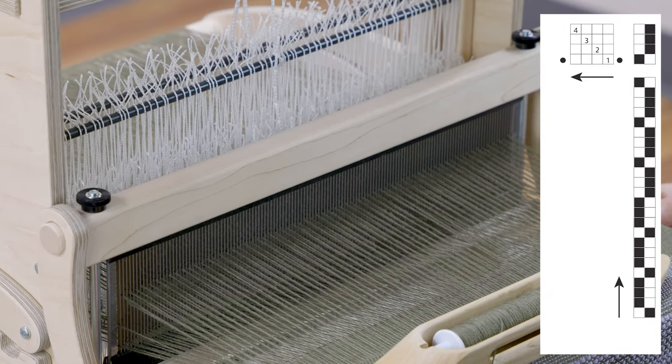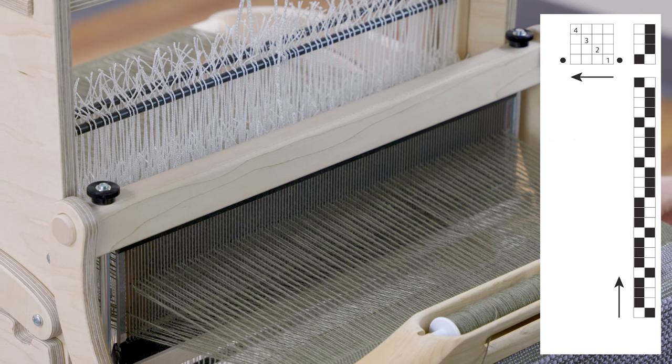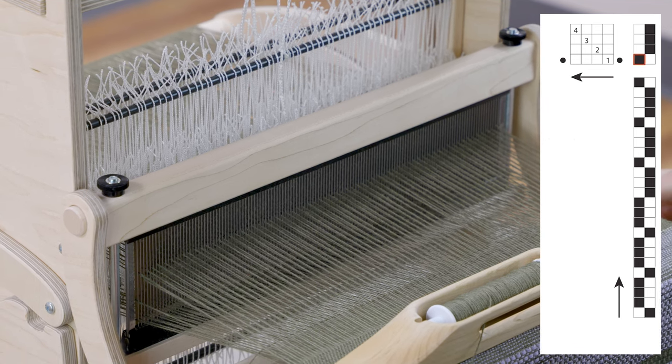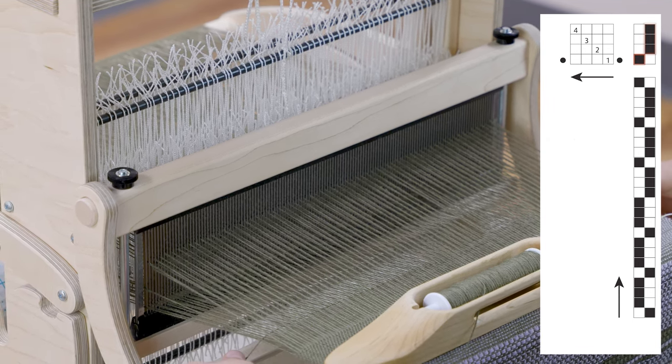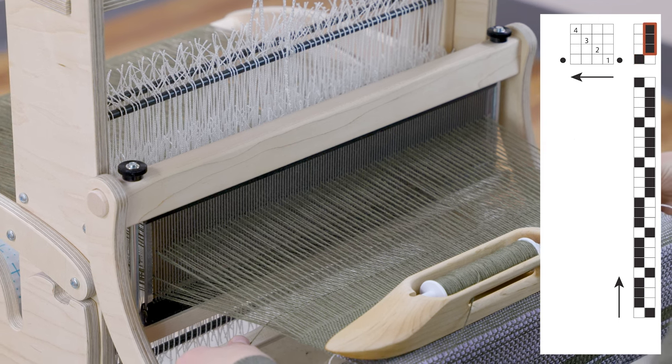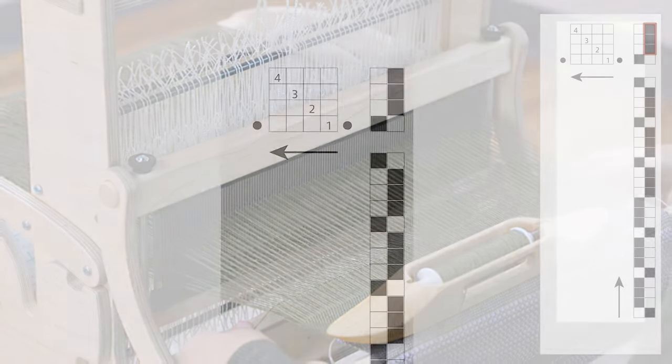If you are working with a loom with treadles, you'll tie up the shafts as indicated. Start with the first column and tie up shaft one. Then tie up the second treadle with shafts two, three, and four.